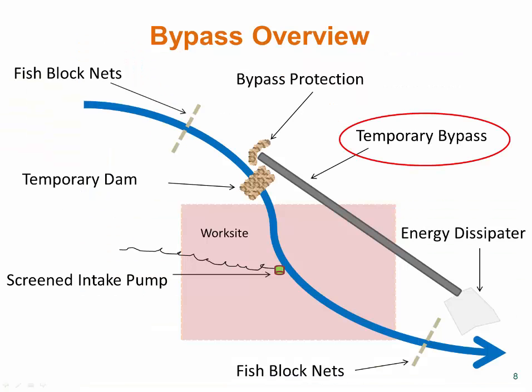The next step is to install the temporary water diversion structure. Flows can be diverted with pumps or passive systems such as side channels or culverts. The temporary bypass system must consist of non-erosive techniques such as a pipe or a plastic lined channel, both of which must be sized large enough to accommodate the predicted peak flow rate during construction.